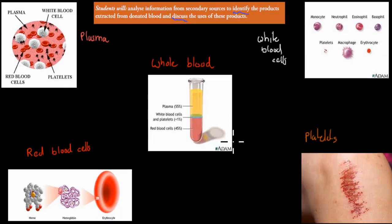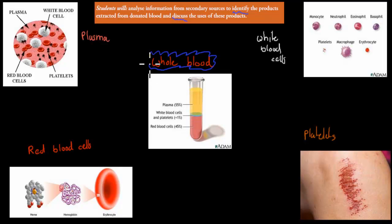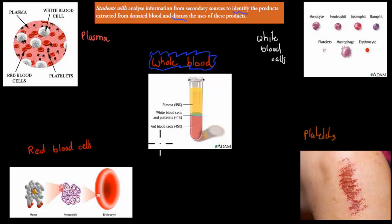First I'll quickly talk about whole blood. Whole blood is just normal blood — when you donate blood, that's the blood you actually donate. This whole blood has different components, so whole blood is a mixture between different components.